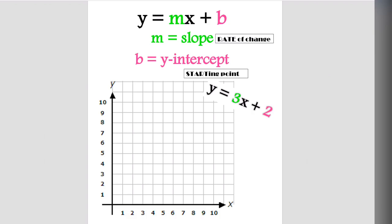In this equation, y equals 3x plus 2, we can see that 2 is the starting point. So we graph at 0, 2 — or at 2 on the y-axis. We then move with our slope, which is 3. We create a rate by putting 3 over 1.